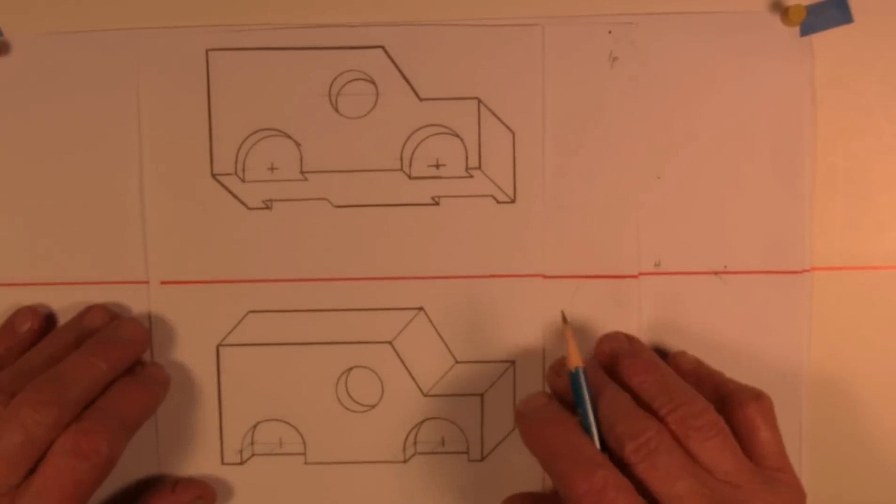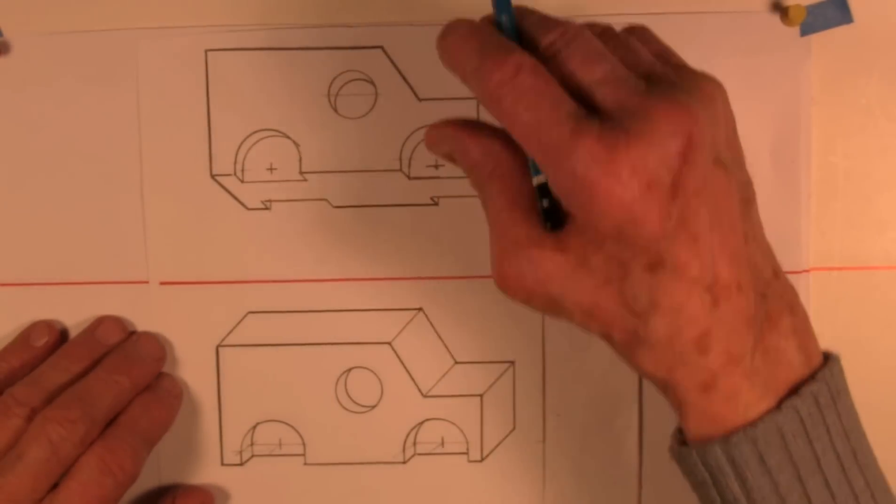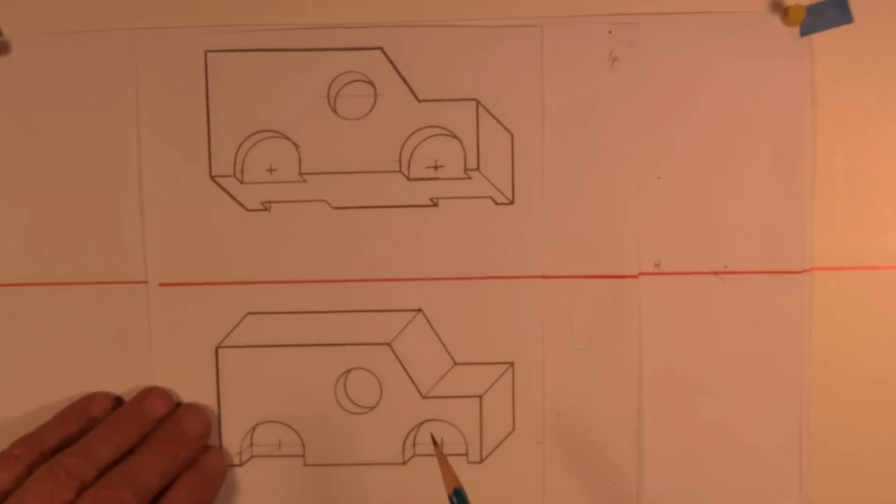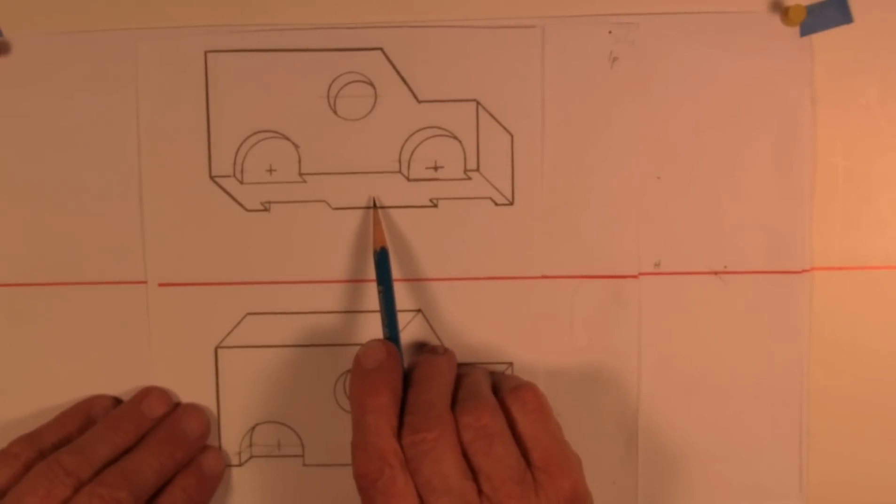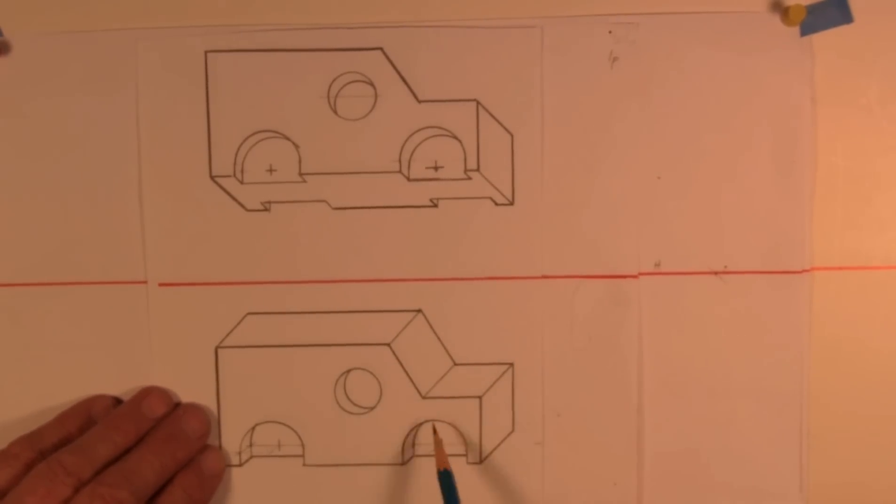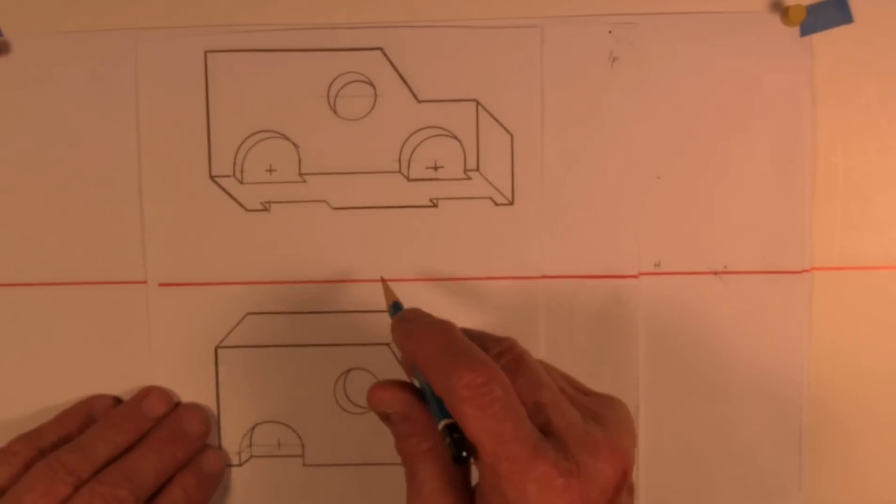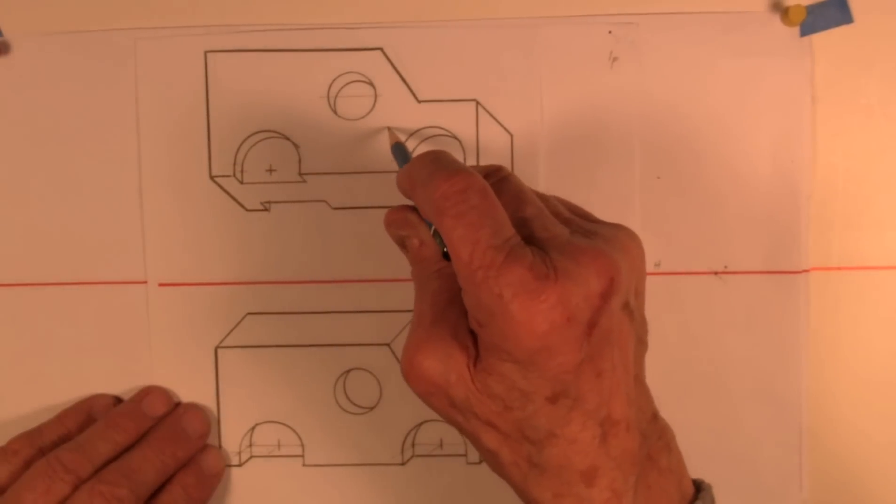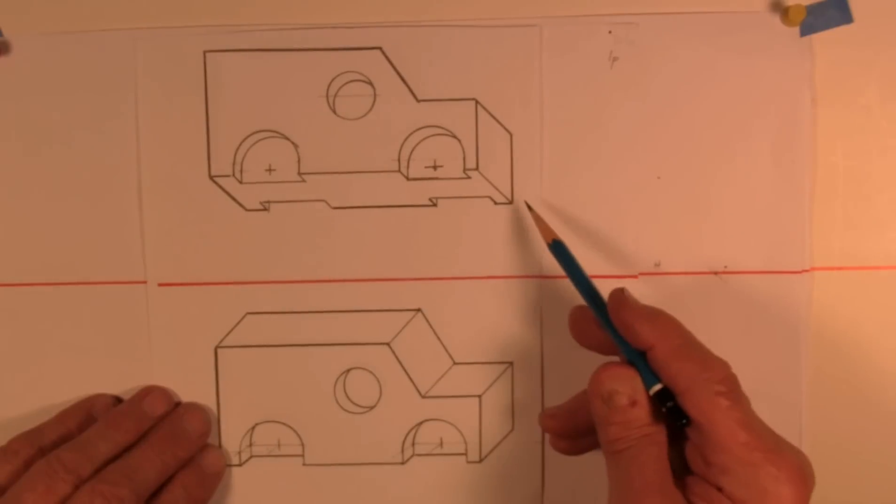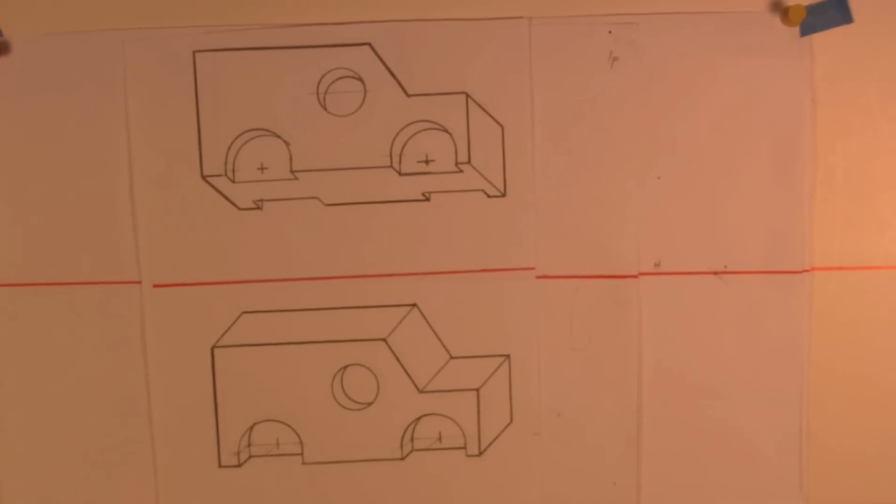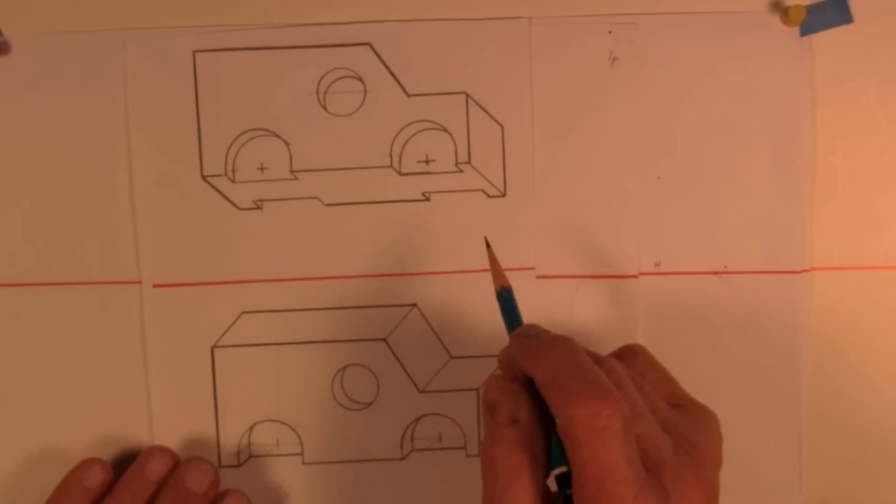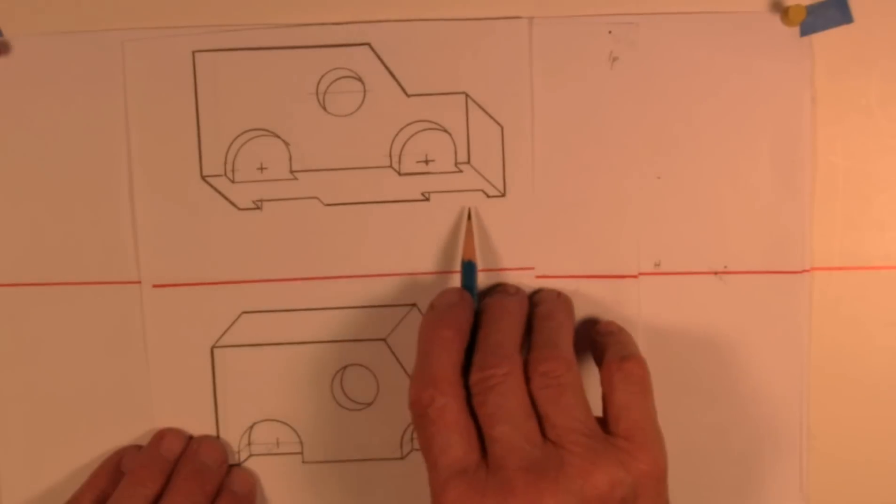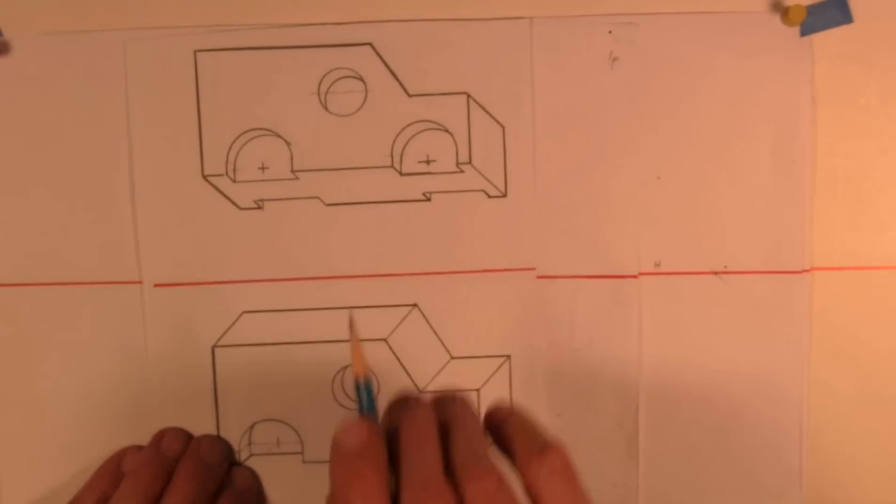Now, depending on where you place the object, above or below, depends on what portions or planes of the object you'll see. When it's below the line, you're going to see more of the top and the front. When it's above, you'll see the front and the bottom and some of the sides. So, it's a way of manipulating the drawing to take a view to show a viewer details in the bottom, back, front, top, or bottom.